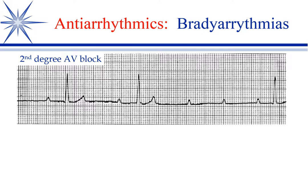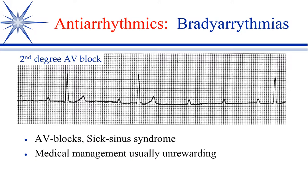We're going to start off talking about arrhythmias. Broadly speaking, we divide them into bradyarrhythmias and tachyarrhythmias. Bradyarrhythmias mean an abnormally slow heart rate. Here we see a second-degree AV block. First degree is a prolonged PR interval, but this is second-degree because you've got P waves without QRS complexes following. You'll also see sick sinus syndrome, where conduction through the sinoatrial node does not occur.